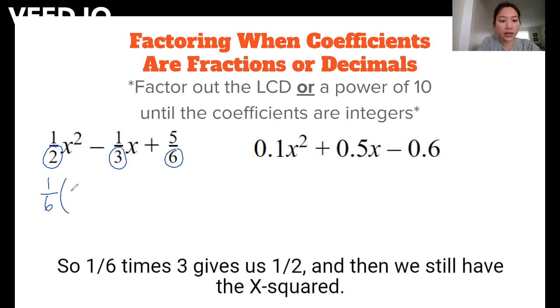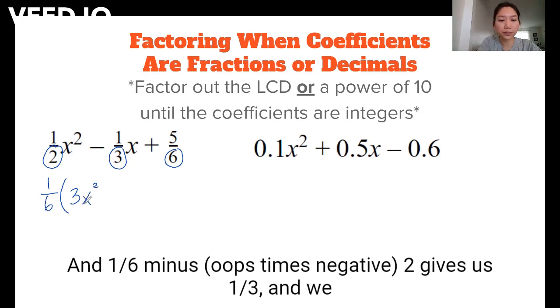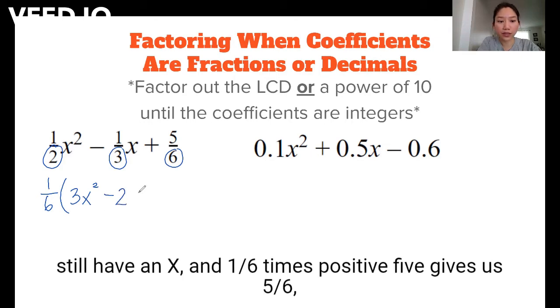So 1/6 times 3 gives us 1/2, and we still have the x². And 1/6 times -2 gives us -1/3, and we still have an x. And 1/6 times 5 gives us 5/6.